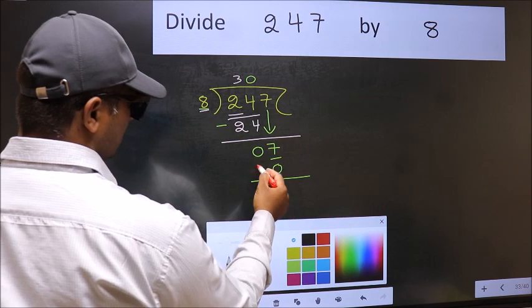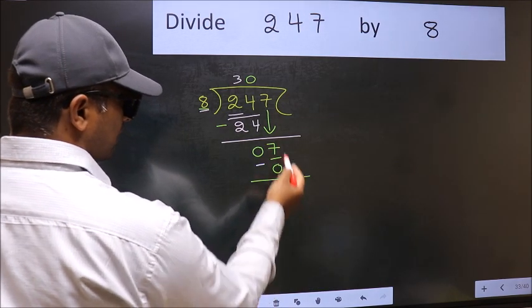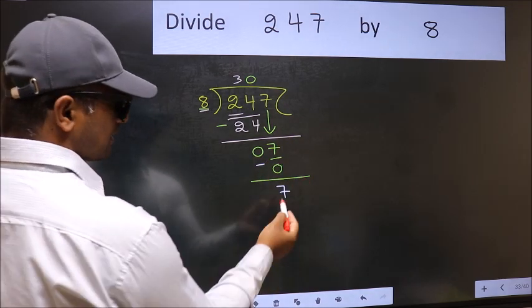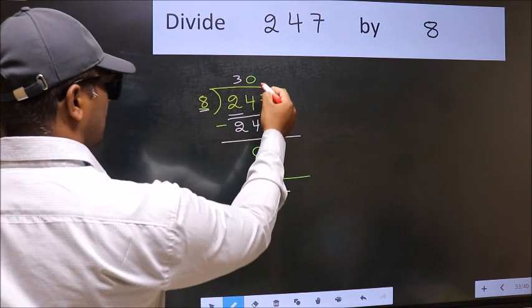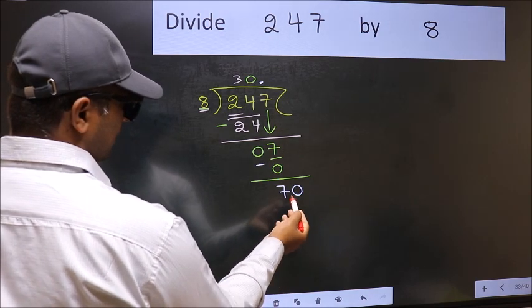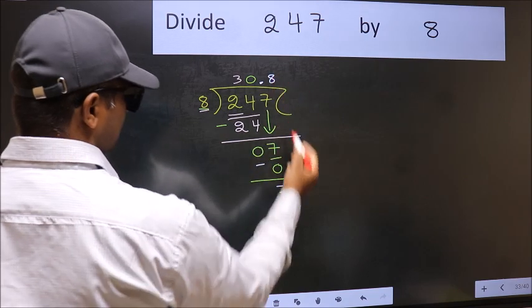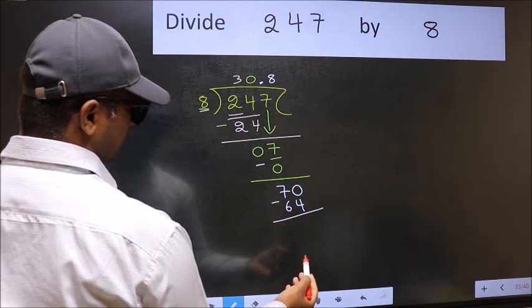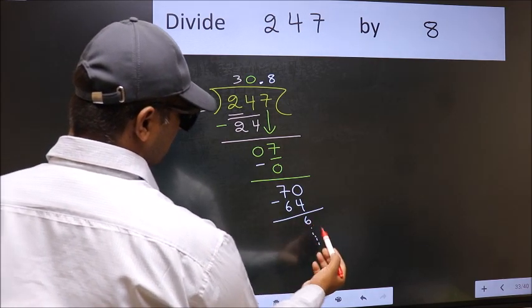Now we should subtract: seven minus zero equals seven. Over here we did not bring any number down, and seven is smaller than eight, so now you can put dot and take zero. So 70—a number close to 70 in eight table is eight eights 64. Now you should subtract, we get six, and continue the division.